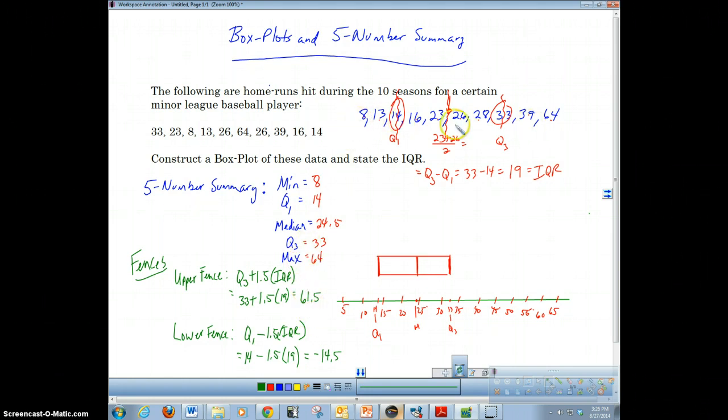We're going to look at our data. Is there anything here that's lower than negative 14.5? No, there isn't. So we're going to go to our min, which was 8, and draw a line for 8 and connect it to our box. Then we're going to see if there's anything bigger than 61.5. Oh, there is: 64. So we're going to put either a little star or a dot showing that's an outlier. Then we're going to take whatever value is closest to 61.5, which is 39, and that's going to be the end of our whisker.